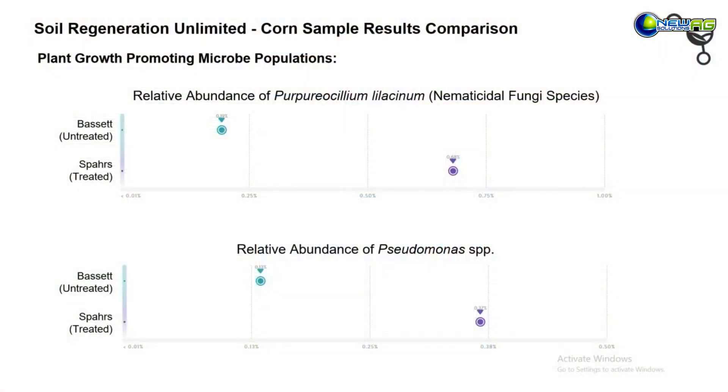We can also look at beneficial microbe populations the same way. On top, the relative abundance of a nematicidal fungi called Purpureocillium lilacinum — a nematophagous fungi that actually feeds on nematodes — was likely one of the species that drove up that nematicide agent level. Its relative abundance was 0.68% of the total microbiome in the treated sample versus 0.19% in the untreated. Pseudomonas, a heavily studied genus of plant growth-promoting bacteria, was also higher at 0.37% versus 0.13% in the untreated.